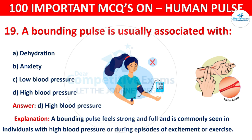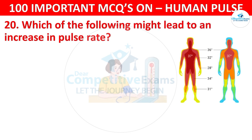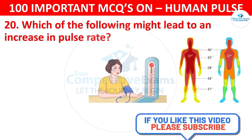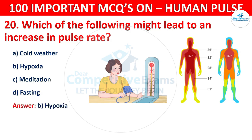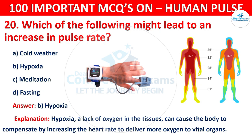Question number 20: Which of the following might lead to an increase in pulse rate? Your options are: Cold weather, Hypoxia, Meditation, or Fasting. The correct answer is B, that is hypoxia. Hypoxia, a lack of oxygen in the tissues, can cause the body to compensate by increasing the heart rate to deliver more oxygen to vital organs.